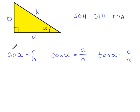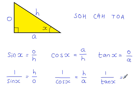If we take the reciprocal of each of these, then you get 1 over sine X is equal to, and if you flip this over, hypotenuse over the opposite side. You get 1 over cos X is equal to the hypotenuse over the adjacent. And you get 1 over tan X is equal to the adjacent over the opposite.